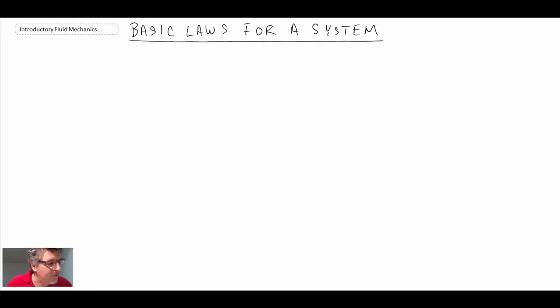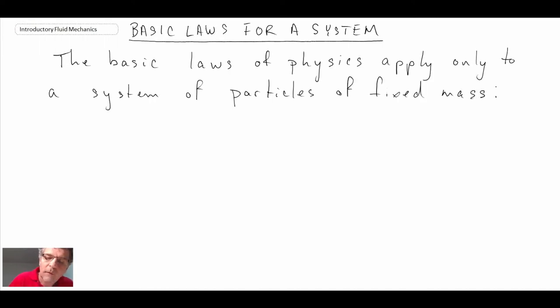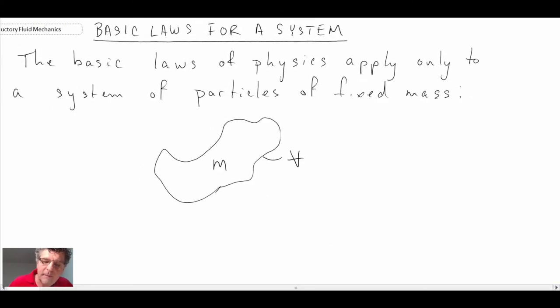These are basic laws for a fixed mass system. We have our basic laws applying to a fixed mass. Let's say we've got some chunk here, mass M, that also occupies some volume V. Typically when dealing with the laws of physics, we refer to this as our system.